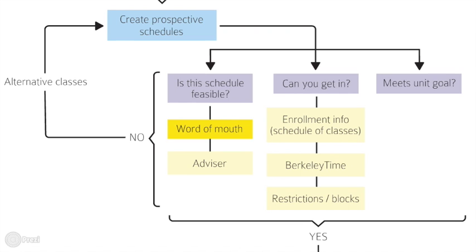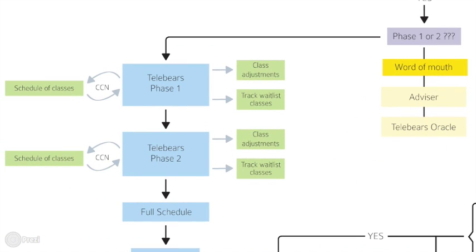Then they enter the enrollment phase. You'll see there are multiple paths in the enrollment process. Students often don't get or are waitlisted for the classes they want and may have to adjust their schedule multiple times. Currently students do this under high pressure under the Tele-BEARS system.